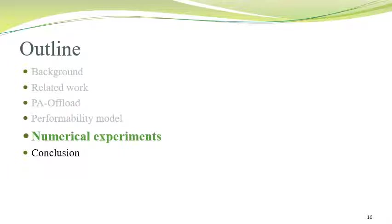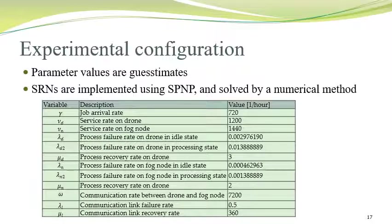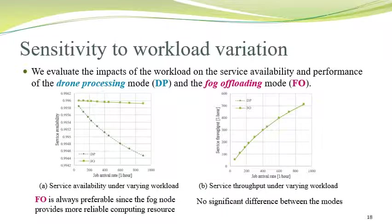Based on this model, in order to evaluate the effectiveness of our approach, we conducted numerical experiments. The experimental configuration uses parameter values based on estimates, and SRNs are implemented using SPNP — a stochastic Petri net package — solved by the numerical Gauss-Seidel method. First, we conduct sensitivity analysis to workload variation, evaluating the impacts of workload on the service availability and performance of drone processing mode (DP) and fog offloading mode (FO) respectively.